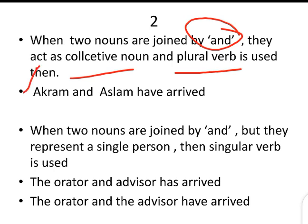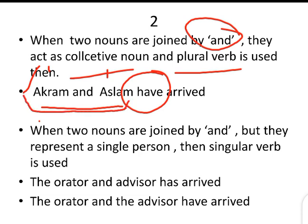For example: 'Akram and Aslam have arrived.' Akram and Aslam are two nouns joined by 'and'. When two nouns are joined by 'and', they become collective nouns. Because of those collective nouns, we use 'have' here. So when two nouns are joined by 'and', they become a collective noun and we have to use the plural form of the verb.